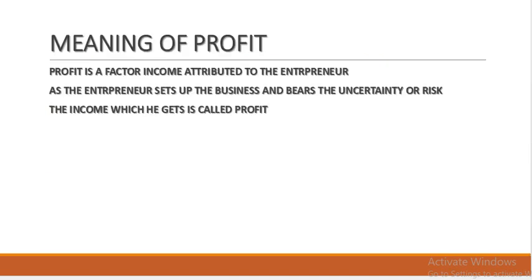First of all, we will understand what is the meaning of profit. There are four factors of production: land, labor, capital, and entrepreneur. Land gets rent, labor gets wages, capital gets interest. It is the entrepreneur who gets the profit. Profit is a factor income available to the entrepreneur, because the entrepreneur sets up the business, takes the risk, and bears the uncertainty. That is why he gets the reward in the form of profit.